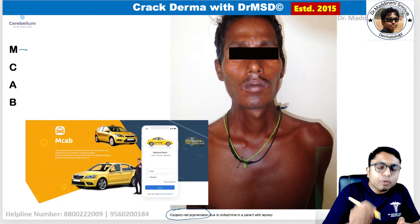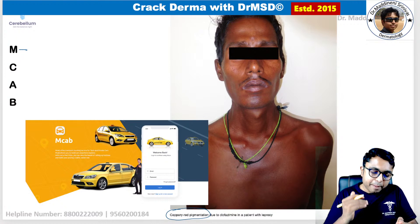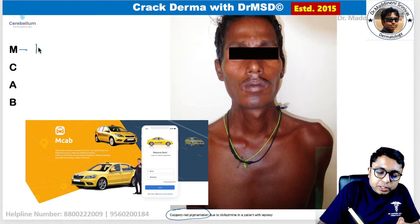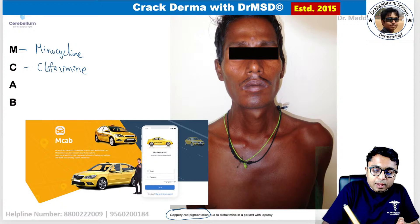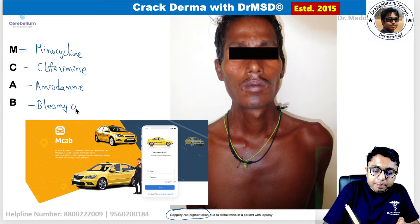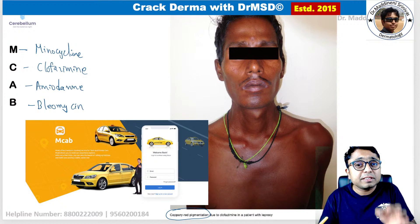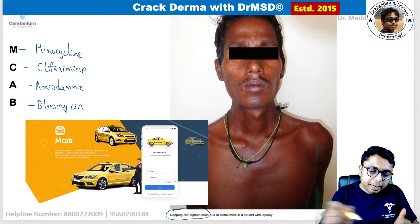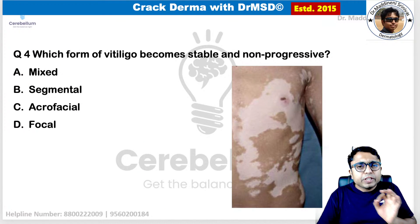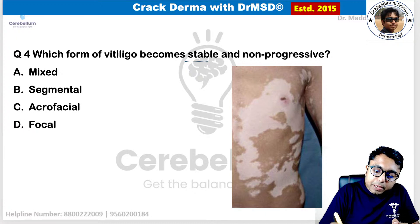You can remember drugs that cause skin pigmentation with the mnemonic MCAB: M stands for minocycline, C stands for clofazimine, A stands for amiodarone, and B stands for bleomycin — which is importantly associated with flagellate dermatitis and flagellate pigmentation.